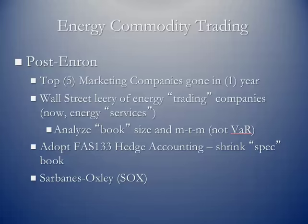In a post-Enron world, a little more than a year after Enron collapsed, what had been the top five energy trading companies in the United States were gone. Wall Street became very leery of energy trading companies. Wall Street analysts now look at book size — total volumetric open positions and the mark to market related to that — rather than putting much confidence in value at risk, which they view as theoretical. More companies adopted FAS 133 hedge accounting, which allowed them to shrink their speculative book by tying positions to physical transactions. And of course there was the adoption of Sarbanes-Oxley.